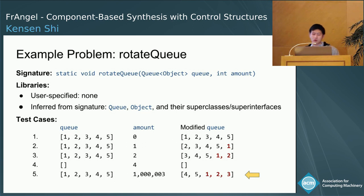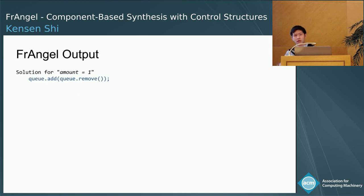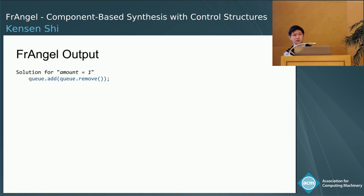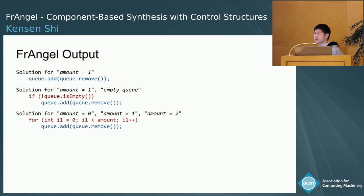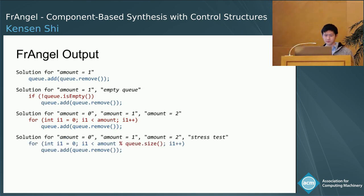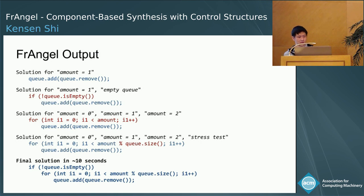When Frangel searches for a solution, it prints out programs that work for some of the examples. Almost immediately, we find that removing an element from the queue and adding it back works for the test case where amount is one. This snippet is useful because if we put it inside an if statement, we can also pass the empty queue case. If we put it inside a for loop, we can pass other test cases. By modifying the loop condition slightly, we can be more efficient and pass the stress test, and finally arrive at a solution combining control structures and four different queue functions. Frangel finds this solution in about ten seconds on average.